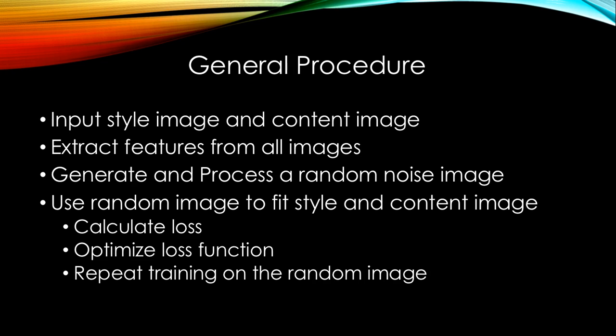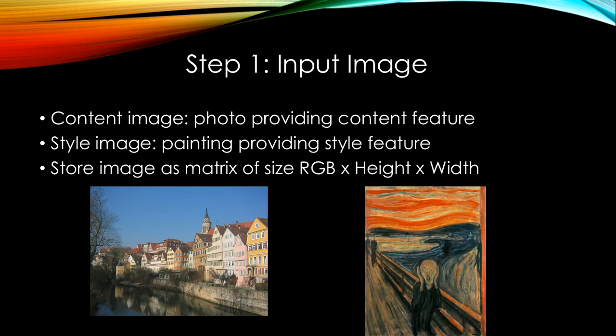Here is an outline of the program that we are going to go through. The first step is to get the image. Images consist of pixels, and each pixel contains information of RGB values. The three color channels — red, green, and blue — determine the color of each pixel, and thus what to show in an image. The image will be converted into a matrix of values with the shape of 3 times height times width. We have the photo to be the content image, and the painting to be the style image.